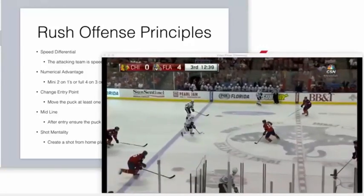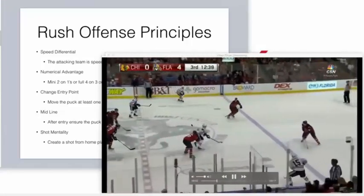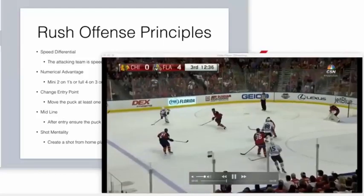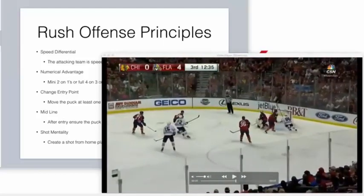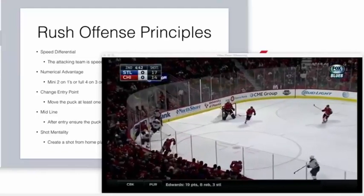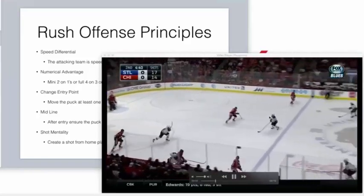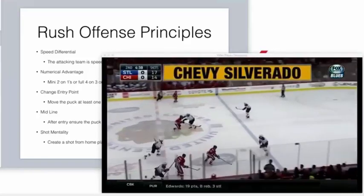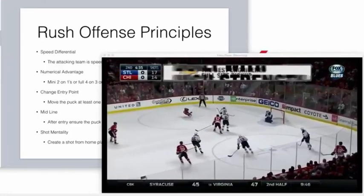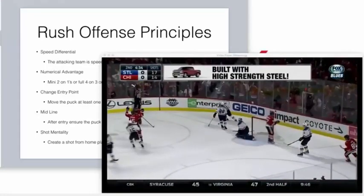Panarin's job is to get up the ice and push the D back so they slow down, enabling Kane to come across the line with speed. There's the speed differential — pushes everybody back, all the D standing still. Change the point of attack, D involved in the rush. Middle of the ice, change the lane, change the point of attack, cross the midline. That's exactly what they're trying to do: follow the principle, get the middle of the ice, change the point of attack, get to the midline, create a midline shot.